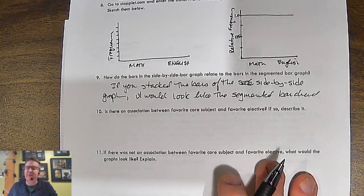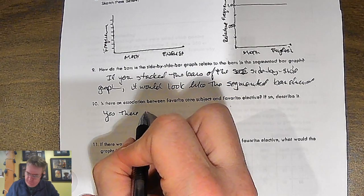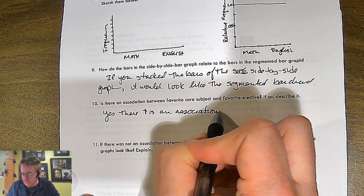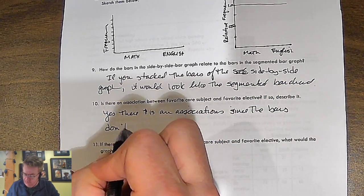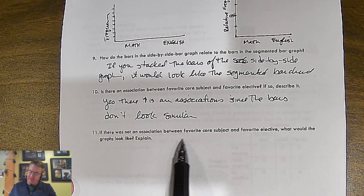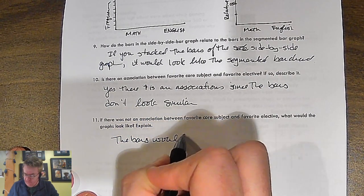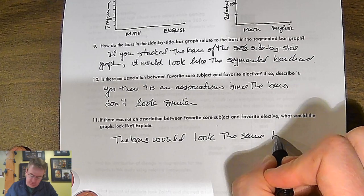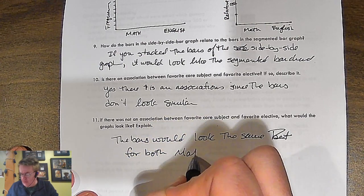So we would say something to the extent of, yes, there is an association. Since the bars don't look the same. If there was not an association between favorite court subject and favorite elective, what would the graphs look like? Oh, well, the bars would look the same. Which ones would look the same between English? The same for both math and English. Ta-da!